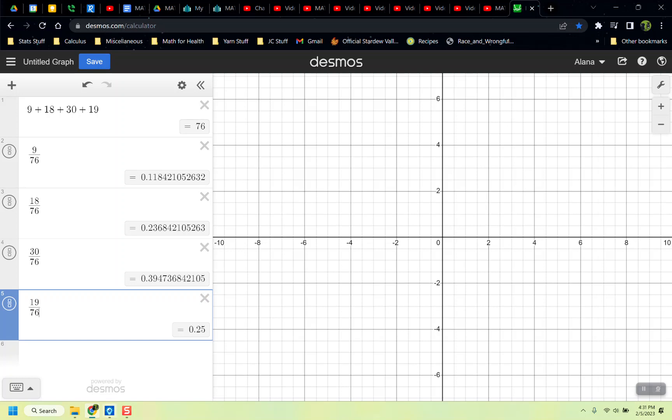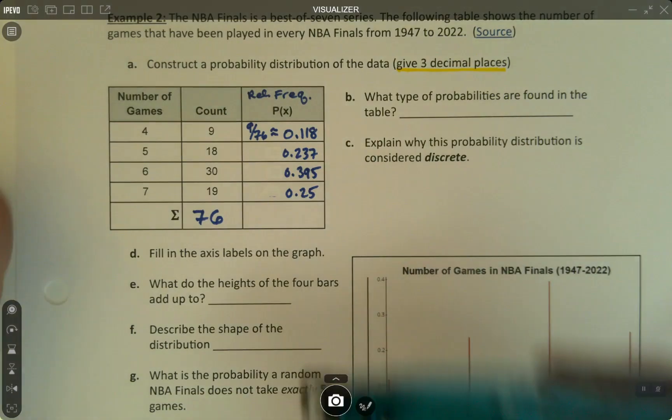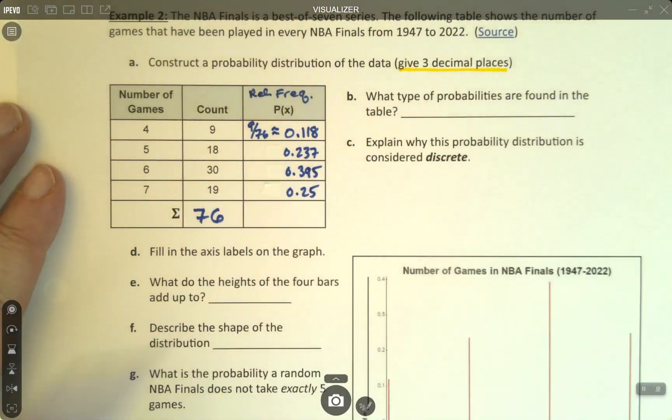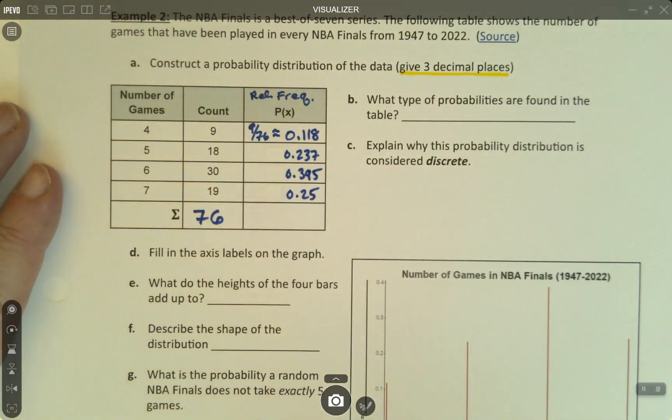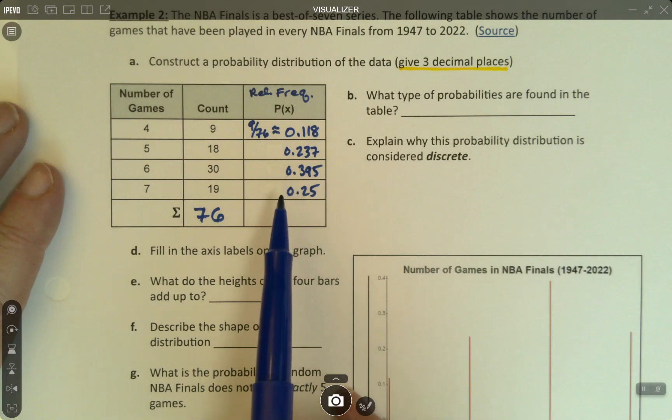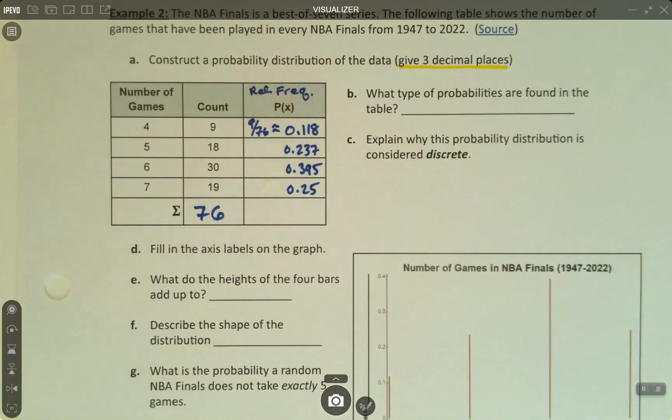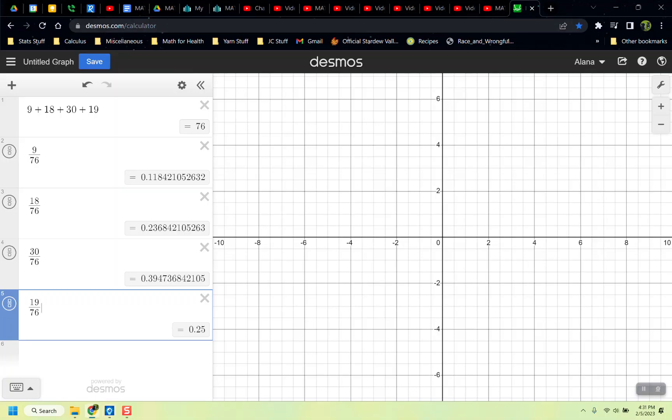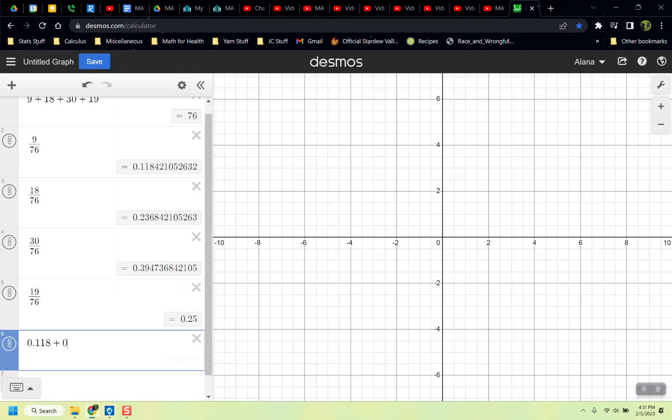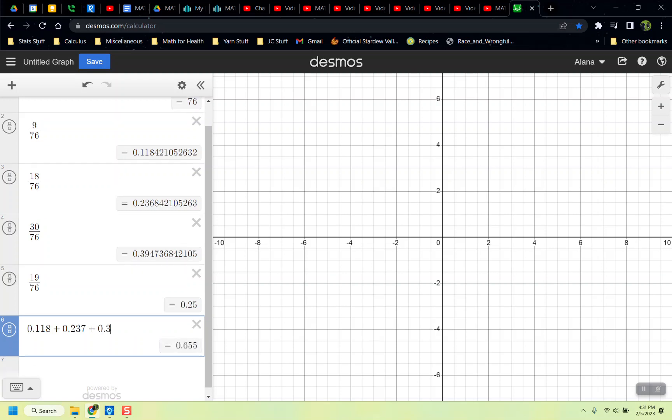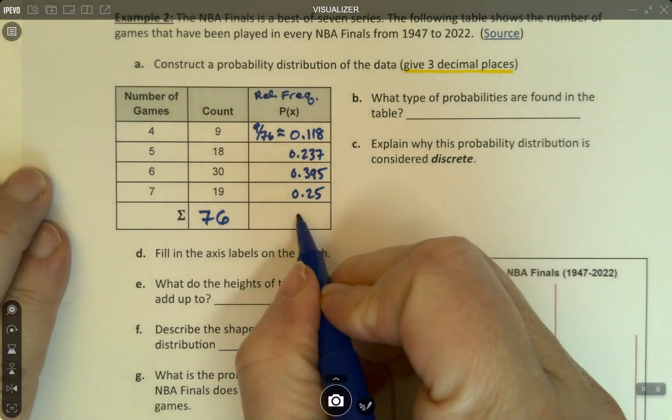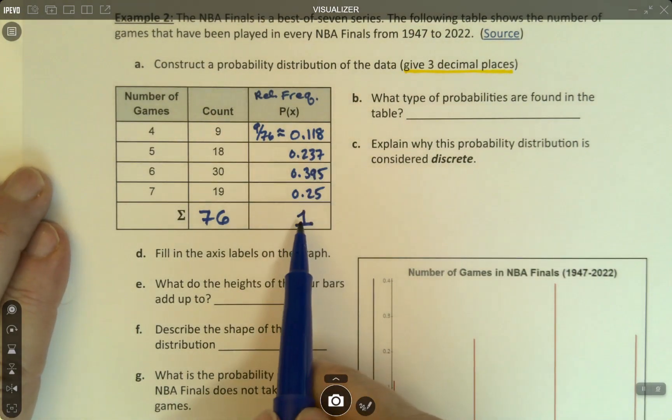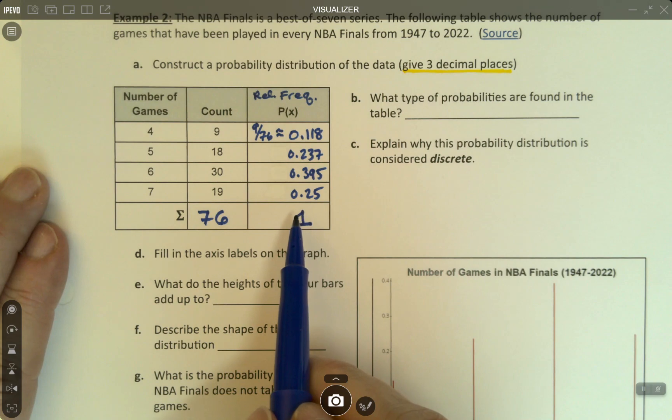You don't have to show the fractions unless you want to. I show the first one to remind everybody how to do it. Now what is the sum of these values? We should double check. 0.118 plus 0.237 plus 0.395 plus 0.25 makes 1. That's what we wanted it to be. It's the sum of those probabilities.